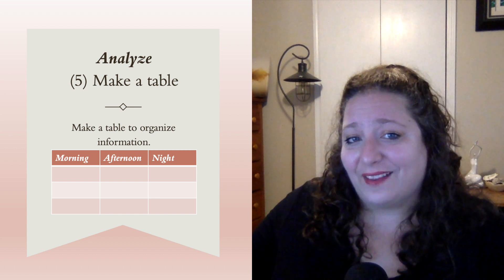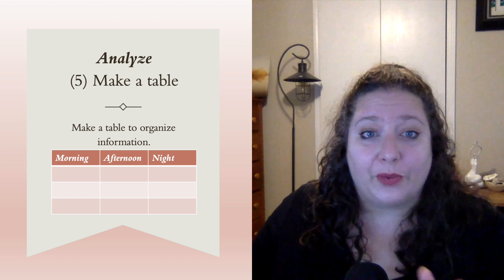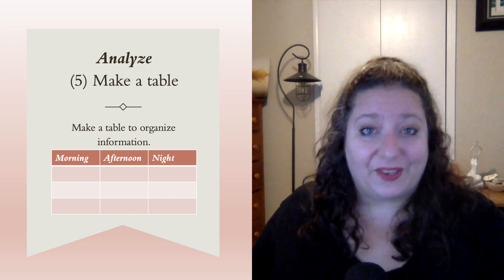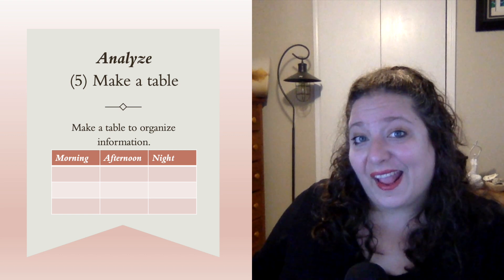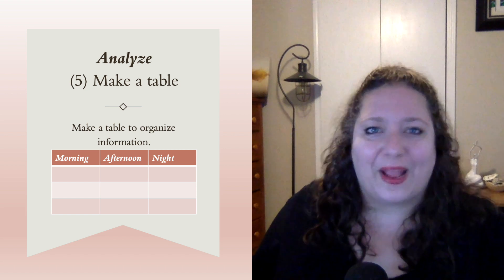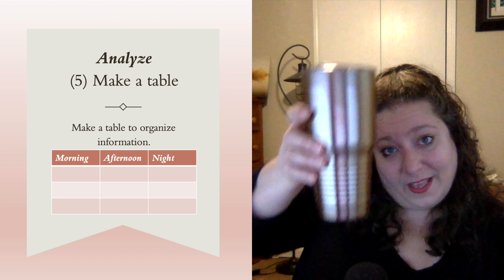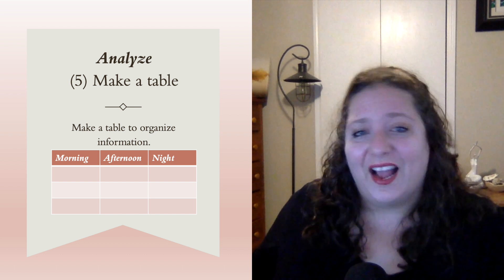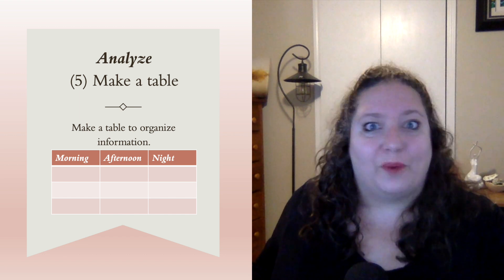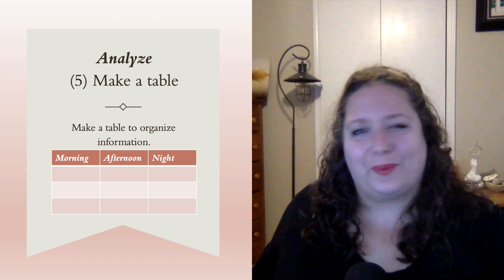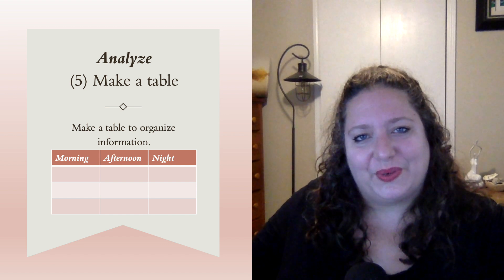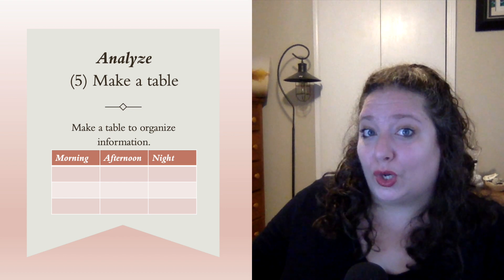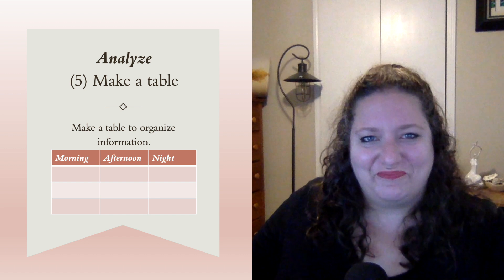The last one for Analyze is to make a table to organize some information. For example, do one on things you do during the day — with columns for morning, afternoon, and night. In the morning: wake up, brush your teeth, get ready for the day, have your coffee. In the afternoon: have lunch. At night: get ready for bed, watch TV. You can categorize things into those different categories and put them into a table using Microsoft Office, Google Docs, or Excel.